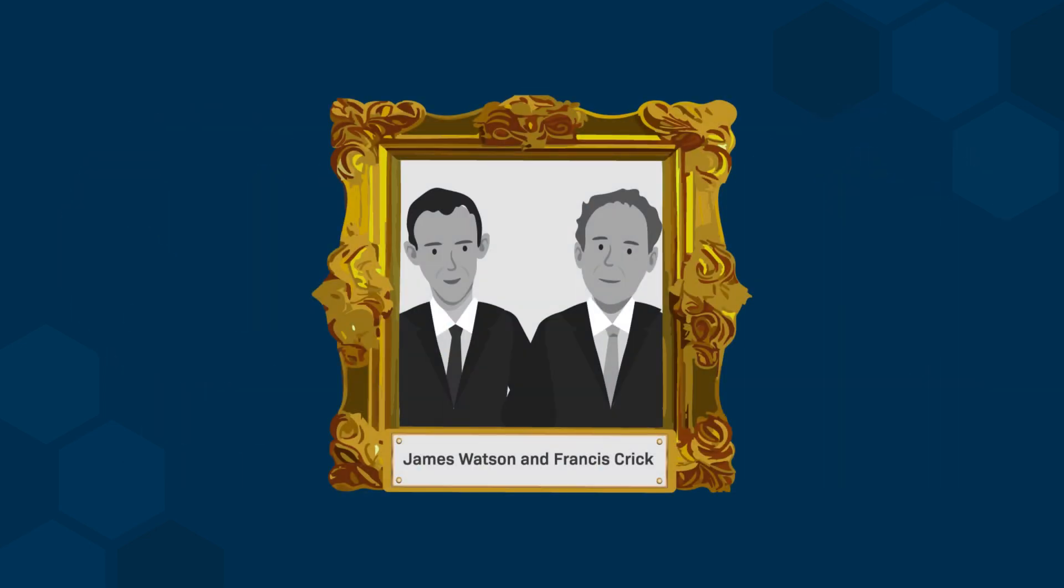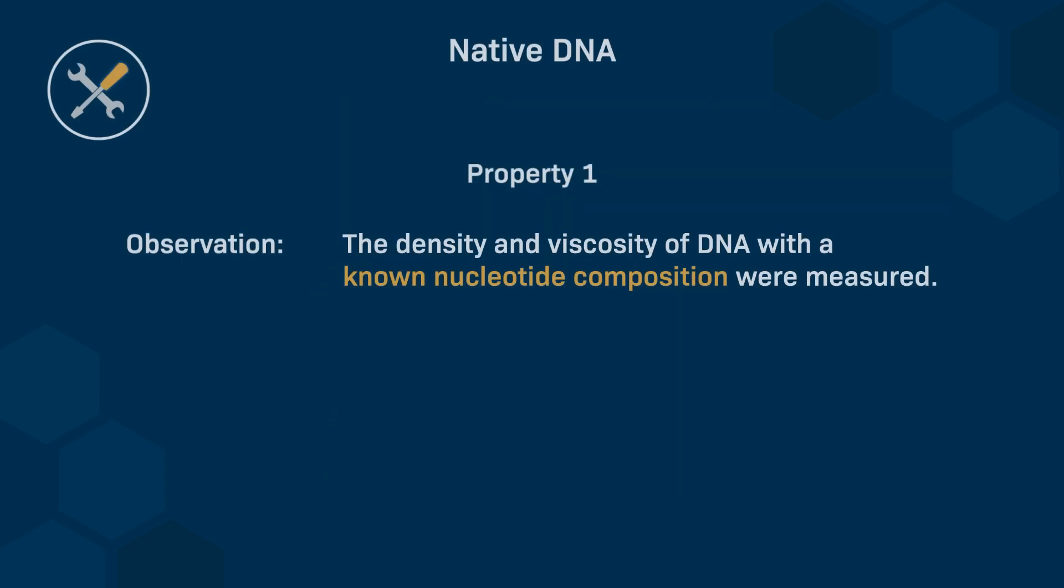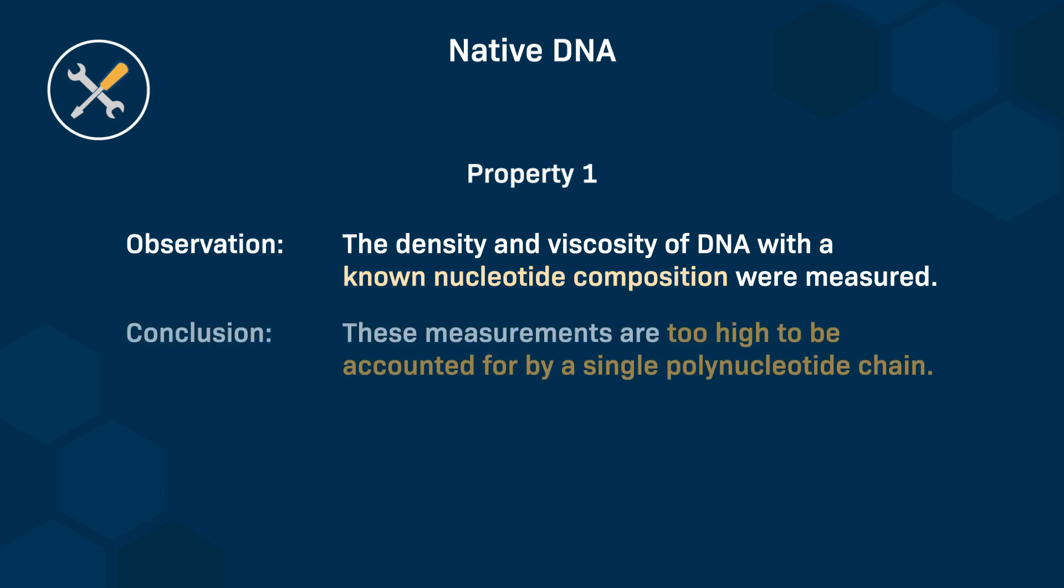This led James Watson and Francis Crick to propose the model of the DNA double helix. To build this model, we must first understand the properties of native DNA. The observation that the density and viscosity of DNA with a known nucleotide composition are higher than expected likely suggests that the DNA is not a single polynucleotide chain, but rather has a more complex structure, such as a double-stranded helix.